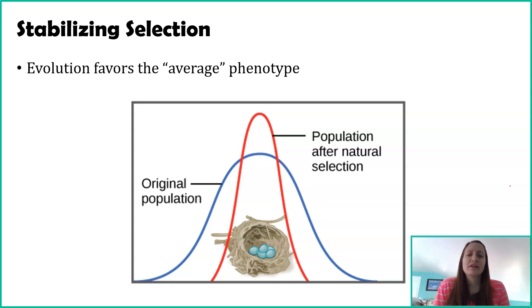If you think about different characteristics, a lot of characteristics follow something called a bell curve. If you've taken a statistics course, that term might sound familiar. If you look at this graph, we'll start with the blue line. The blue line is representing a bell curve.